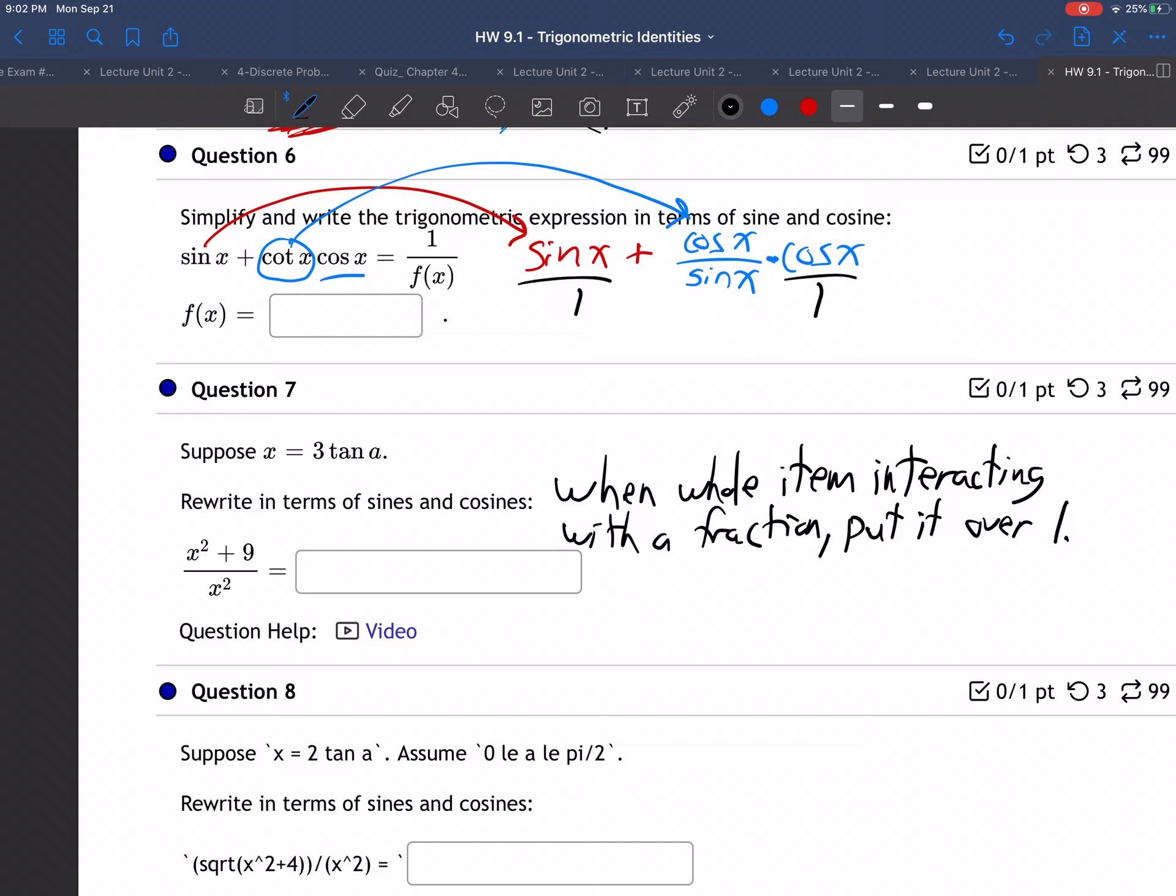This was not a fraction and this was not a fraction, yet they're interacting with a fraction. So put them over one to make them look like fractions. We good with that principle?